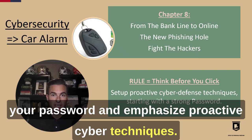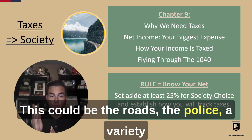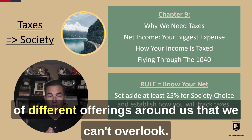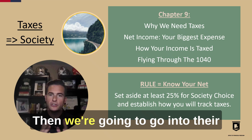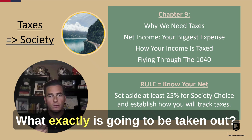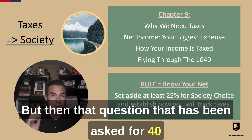As we look around all of society, we have to appreciate what our tax dollars go to support — the roads, the police, a variety of different offerings around us that we can't overlook. Our tax chapter begins by changing the term to 'society.' You'll see that throughout the program, but also why we need taxes. Then we're going to go into their biggest expense and net income — what exactly is going to be taken out. Section 9.3 is going to be how it is taken out in the progressive income tax code, so we understand what our biggest expense is.